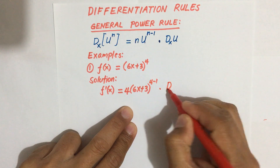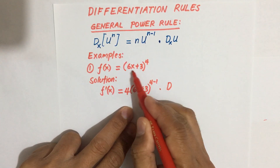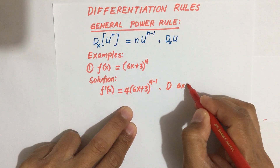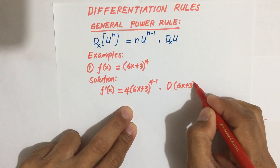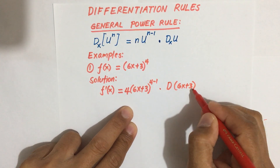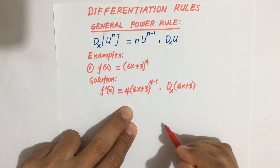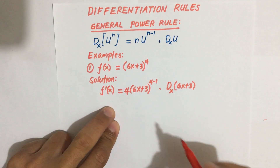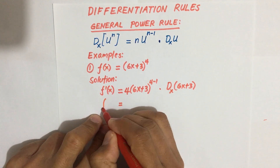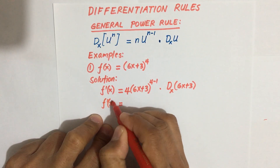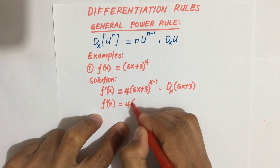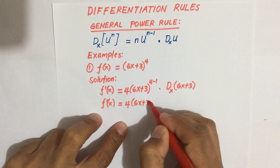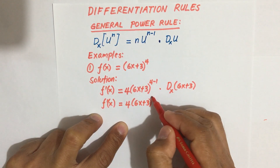Then we multiply by the derivative of u with respect to x. Our u is 6x plus 3. So f prime of x equals 4 times 6x plus 3 raised to the power 4 minus 1, which is 3.